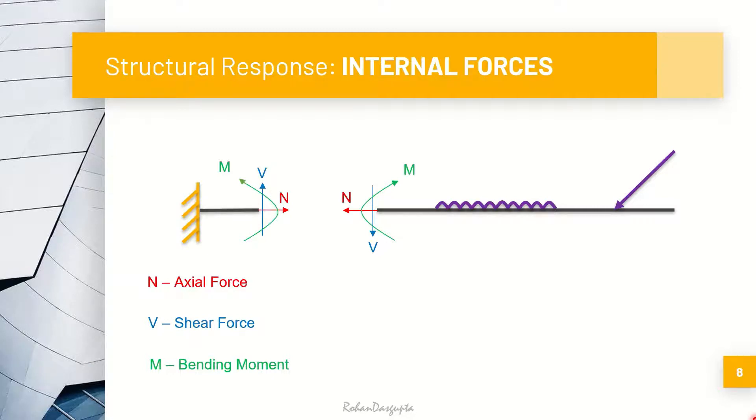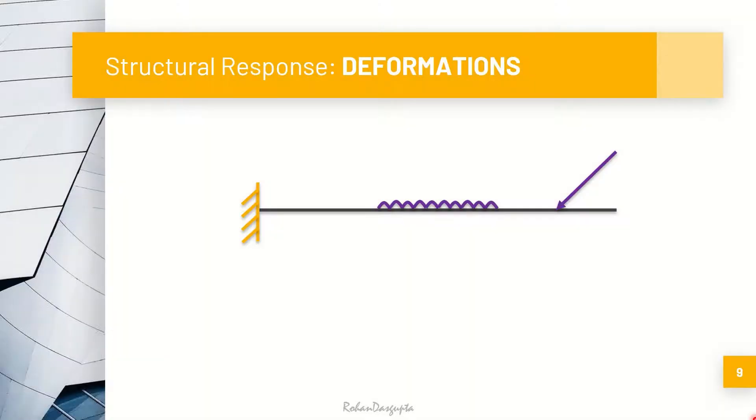Now, these internal forces in turn will give rise to deformations. The structure will deform. Deformations are something which we can see externally, so I do not need to break the beam to show you that. Therefore, I am just going to directly show you the deflected shape of the beam under the given loading. Here if you see, we will examine the free end x, which has now deflected and come down to x bar.